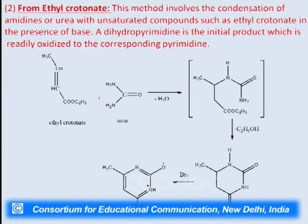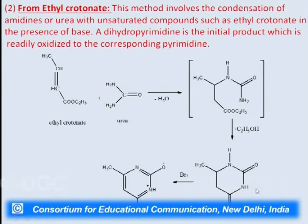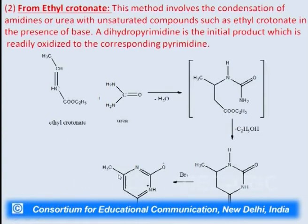Pyrimidine can also be prepared from ethyl crotonate. Ethyl crotonate on condensation with urea or amidine with unsaturated compounds in the presence of a base — water will go out — and we will get a product which is unstable and will immediately lose ethanol and undergo cyclization to form a dihydropyrimidine. This initial product will then be readily oxidized in the presence of bromine to give the corresponding pyrimidine. Since we have taken ethyl crotonate with a methyl substituent, we will get the methyl-substituted pyrimidine.